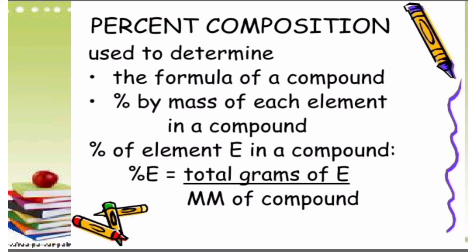So far we were dealing with the number of entities present in a given substance, but many times the information regarding the percentage of a particular element present in a compound is required. The percentage composition of a compound represents the mass of each element present in 100 grams of the compound. Let us understand the percentage composition of oxygen and hydrogen by taking this example.